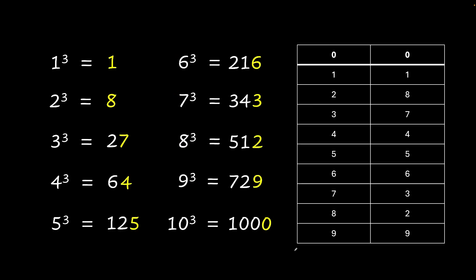And this is the table that you would get. For 0 you end with 0. For 1 you end with 1. For 2 we end with 8. For 3 we end with 7. For 4 we end with 4. For 5 we end with 5. For 6 we end with 6. For 7 we end with 3. 8 we end with 2. And 9 we end with 9.